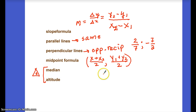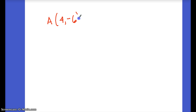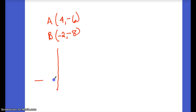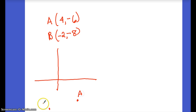Let's do a couple of problems. Suppose you have point A with coordinates (4, −6) and point B with coordinates (−2, −8). You can see A is down here and B is somewhere down here on the graph.